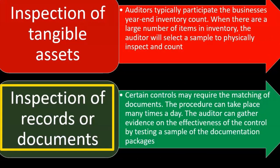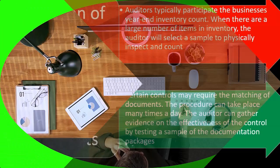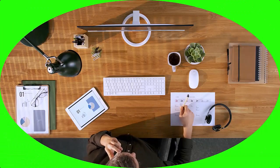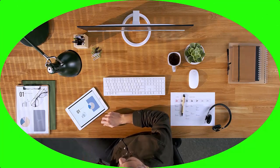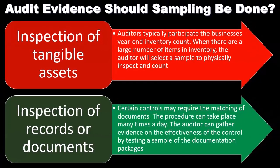Inspection of records or documents: certain controls may require the matching of documents, and this procedure can take place many times a day. The auditor can gather evidence on the effectiveness of the control by testing a sample of the documentation packages. We could pick up the packages, see whether or not those relationships exist, request a sample of these basic packages from the client, and then go through those packages to see if the relationships do indeed exist within them.